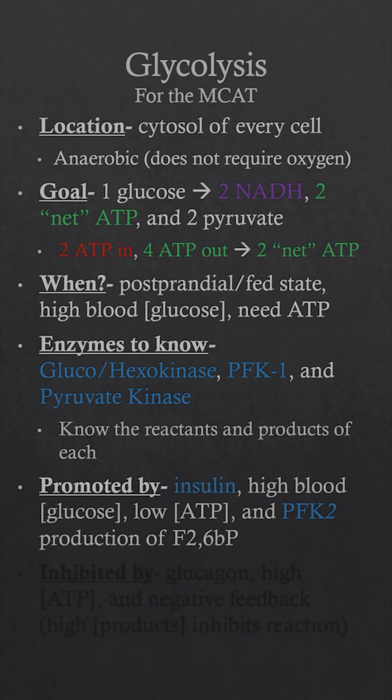Glycolysis is promoted by insulin, high blood glucose, and low energy or ATP conditions. There is an enzyme called PFK2 that responds to insulin by increasing production of a molecule called F2,6BP, which will directly promote one of our glycolytic enzymes.